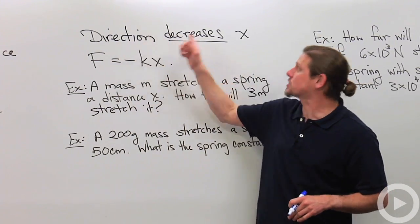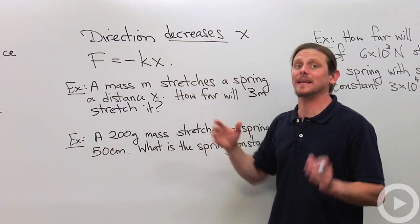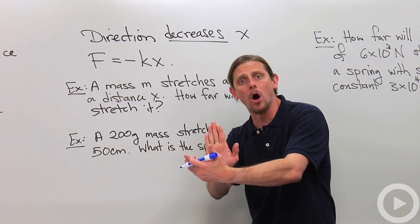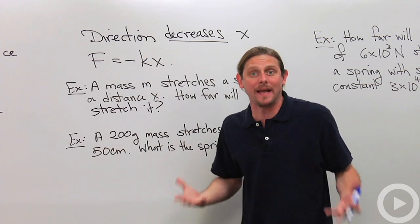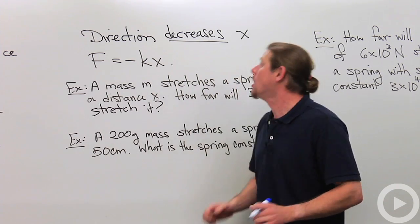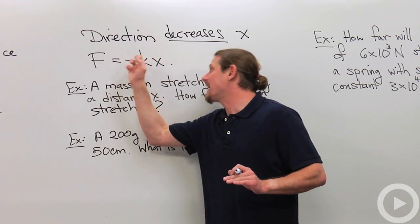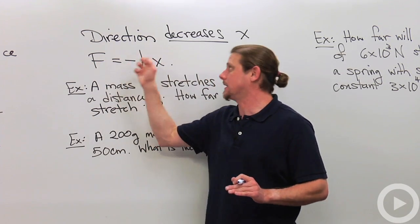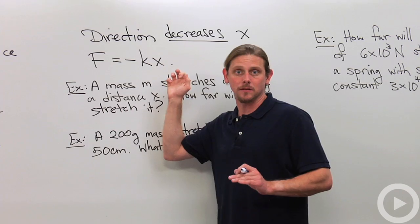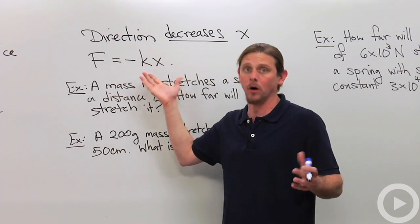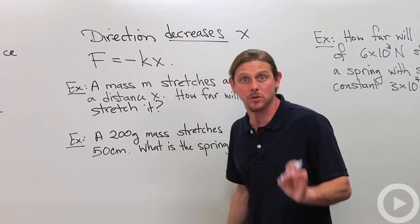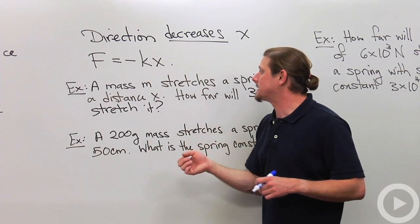First off, the direction decreases X. It acts to make X smaller because we don't want any distortion at all. It wants to be its relaxed length. So for that reason F, the force, is negative KX. It's the opposite of K times X. The magnitude is just proportional, but the direction is opposite because it wants X to be smaller. So let's do an example.